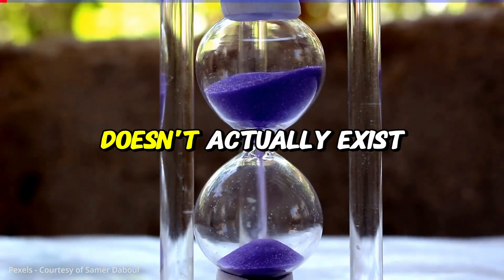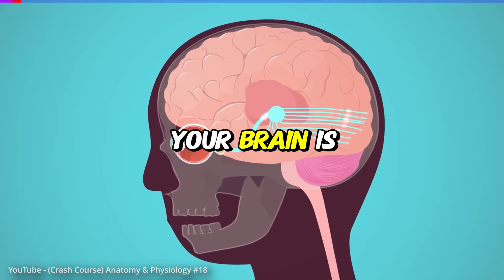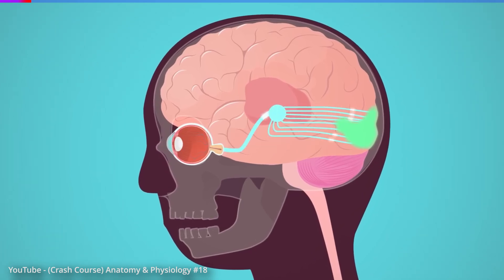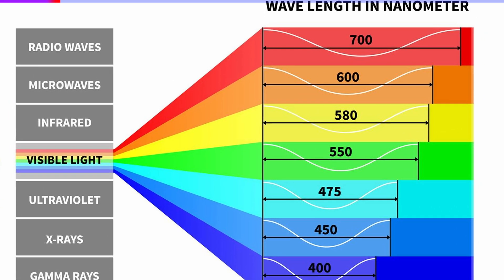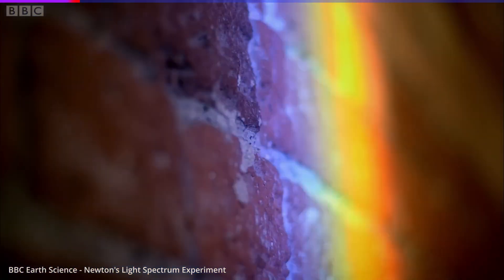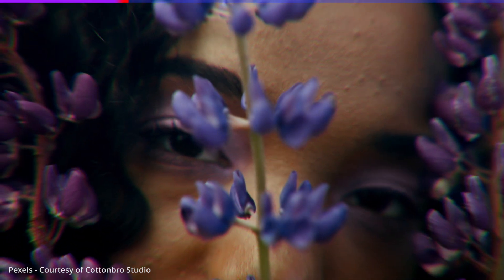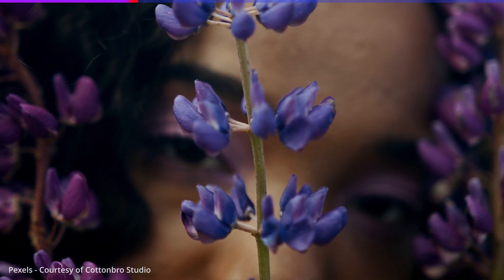Did you know that the color purple doesn't actually exist — your brain is making it up? The way our eyes work is that they receive different wavelengths of light. These different wavelengths range across a series of colors, but purple isn't one of them. Purple doesn't exist as a wavelength of light, and so when we observe something that's purple, something else is actually going on.